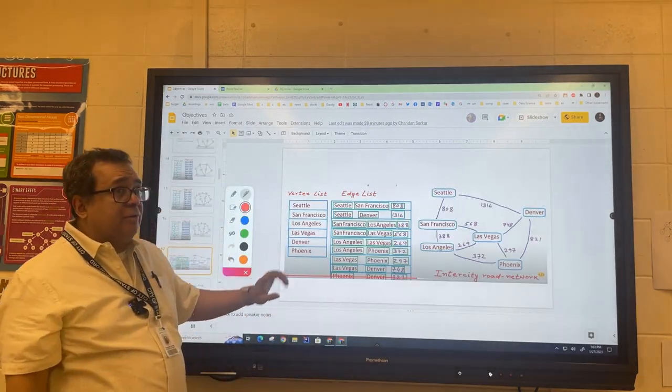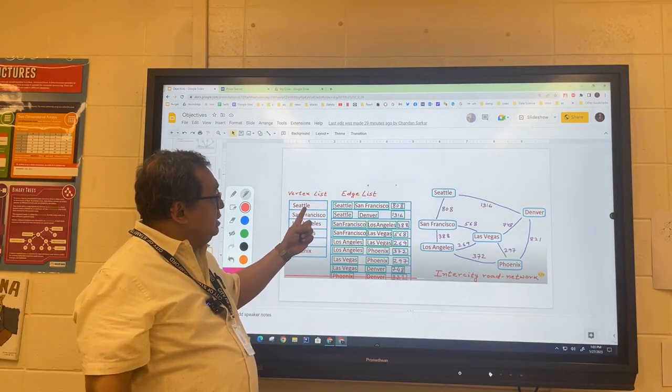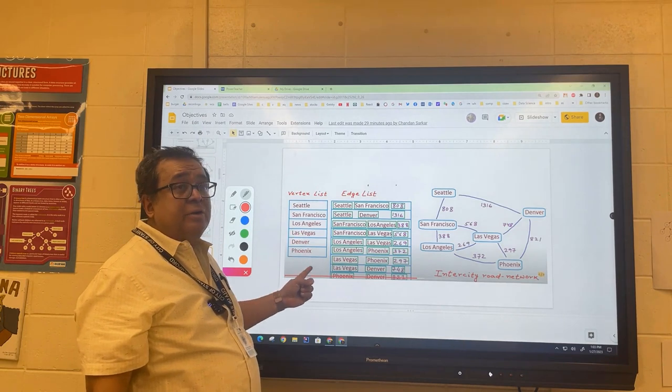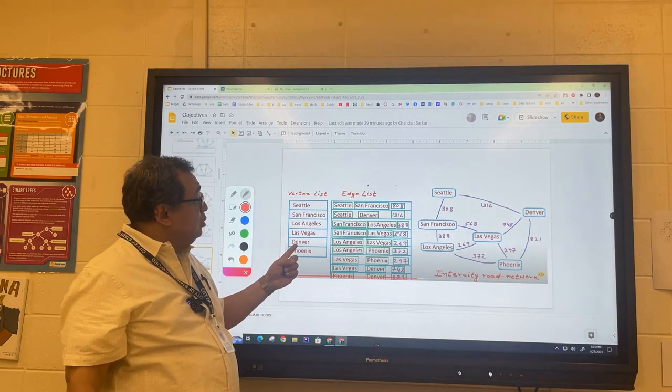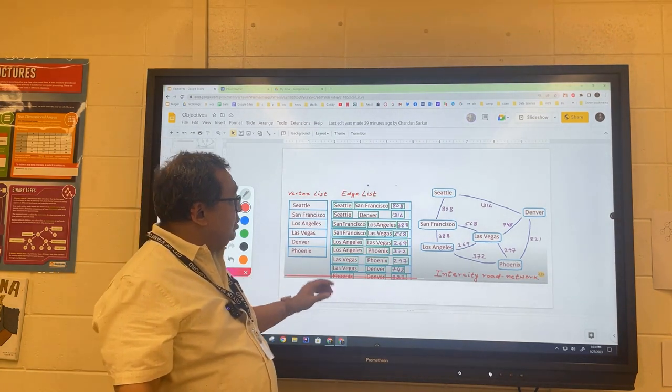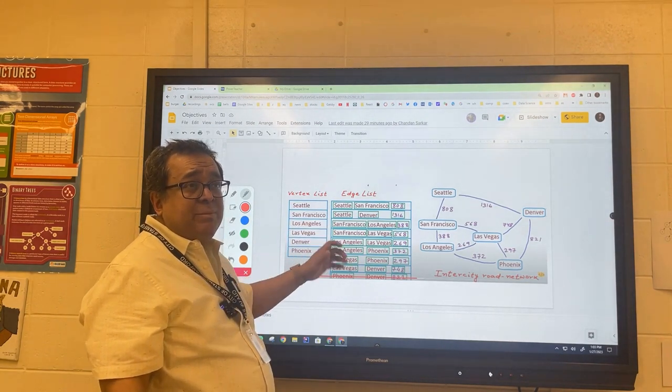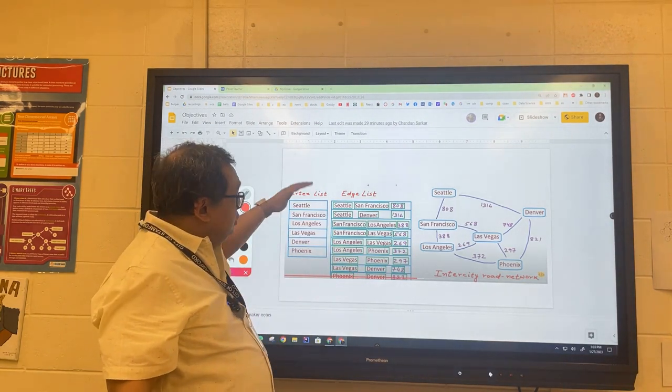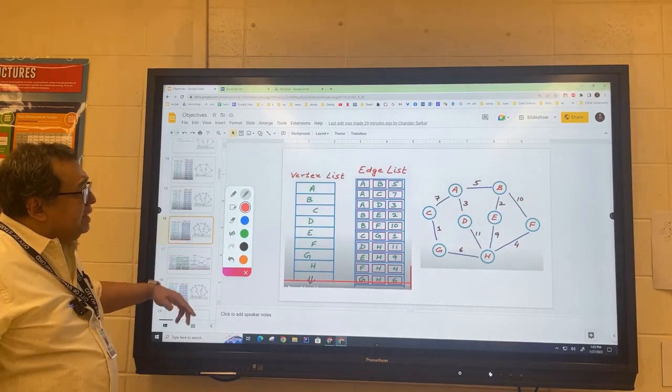Now if you look at this particular graph, you'll see that some of the vertices take up more room than others. For example, Denver takes less room to store than San Francisco because it's got fewer letters. But we're not going to deal with that. We're just going to assume that the names are going to be of some fixed length, some maximum number of characters.